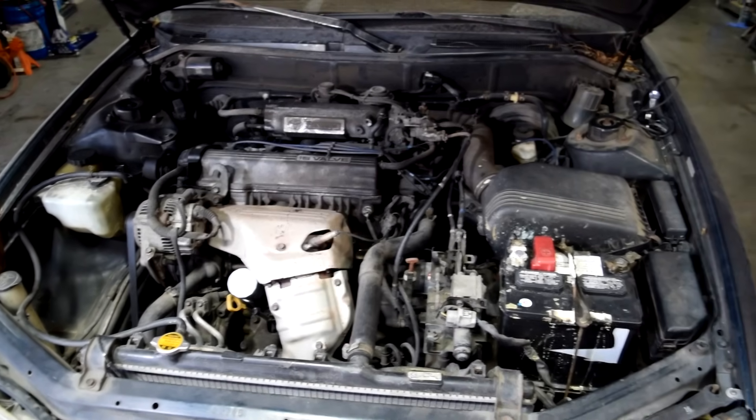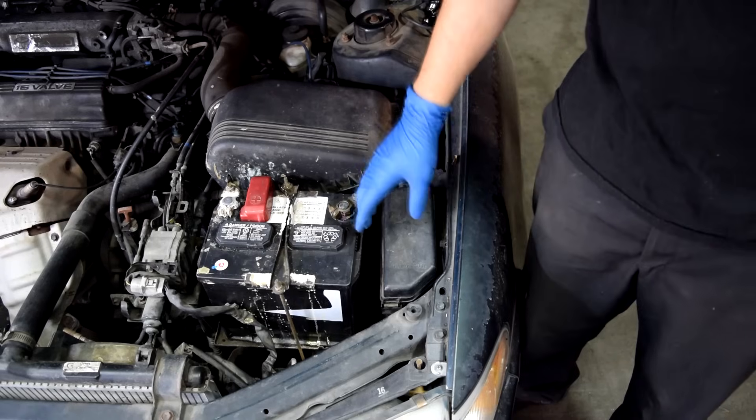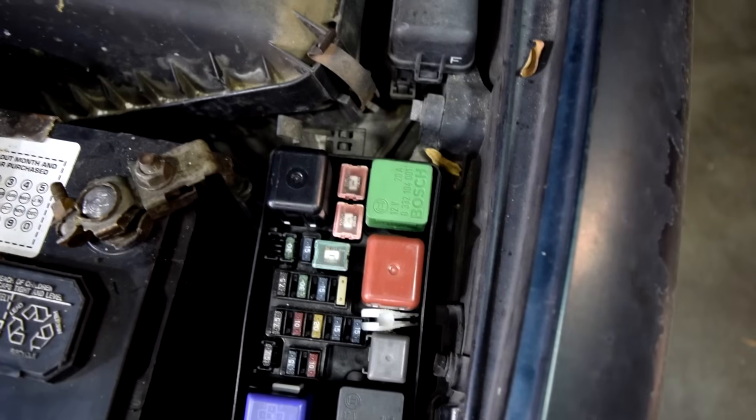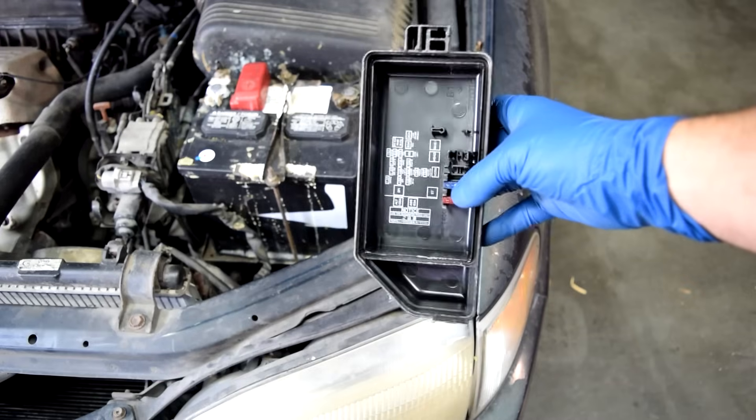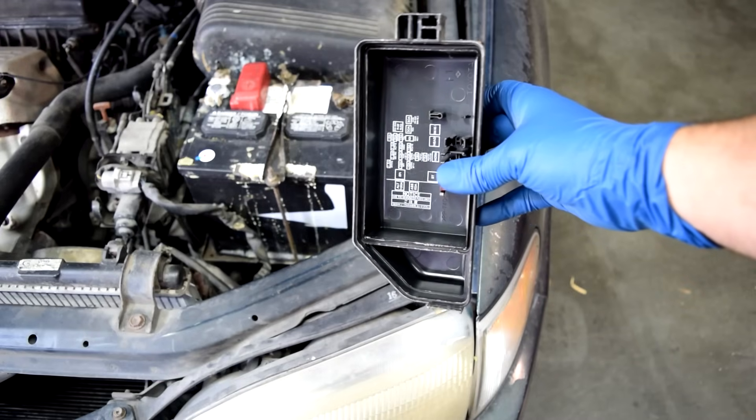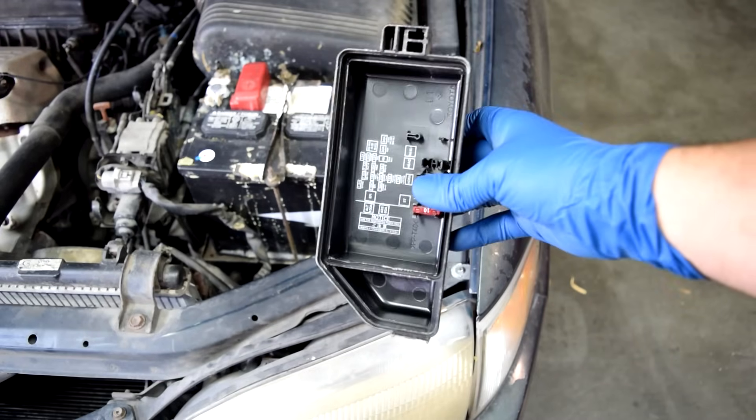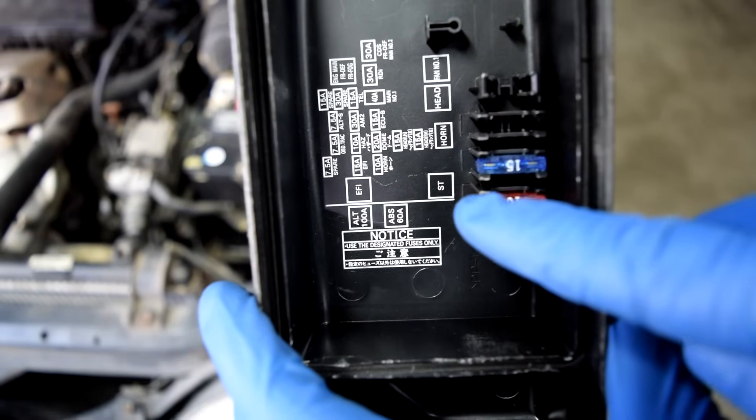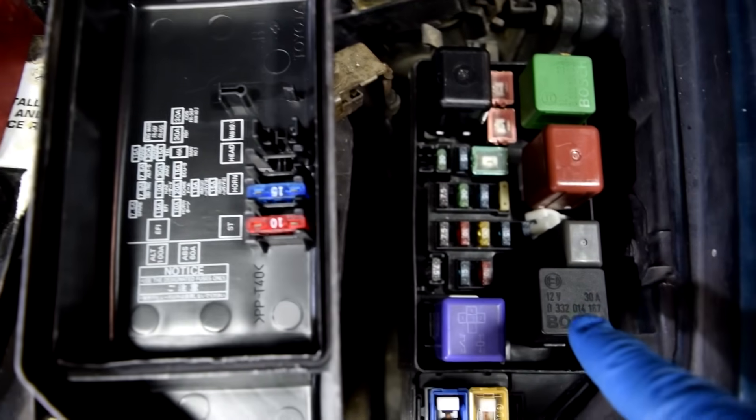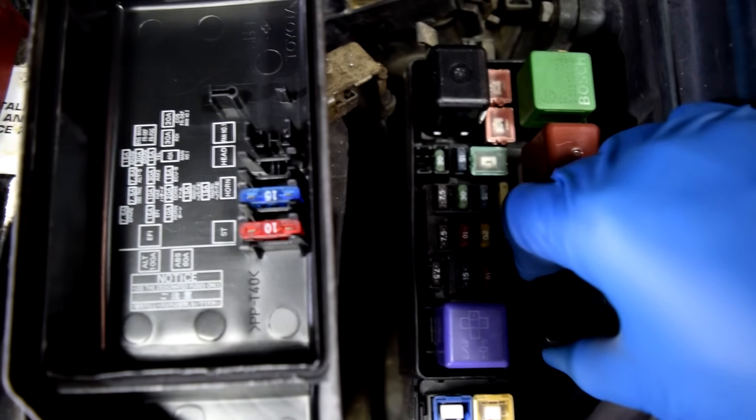Step number one: find your fuse and relay box inside your engine bay. Step number two: remove fuse cover and find your starter relay. And if you're lucky you'll have a little diagram inside your fuse cover that'll tell you what relay is for what. As you can see this diagram is telling you our starter relay is right here, which makes it this one on this panel, so go ahead and remove that next.